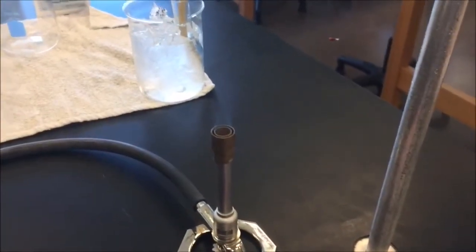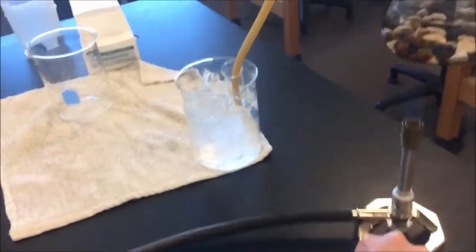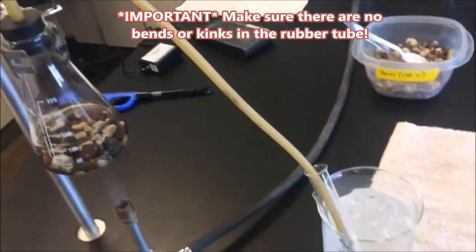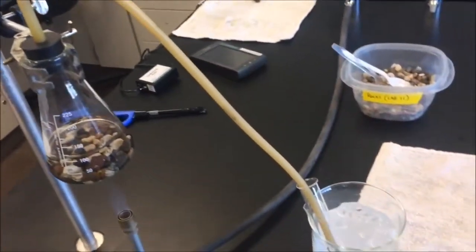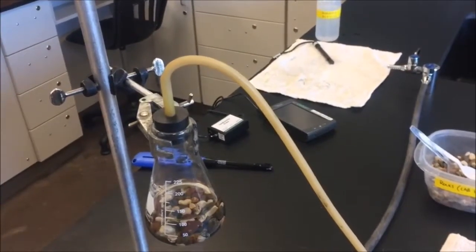Once you're satisfied with your flame, let's move it under the Erlenmeyer flask. Be very careful to make sure that there's no bumps or kinks in your rubber tube. Because that can cause a really bad high pressure situation if that builds up.